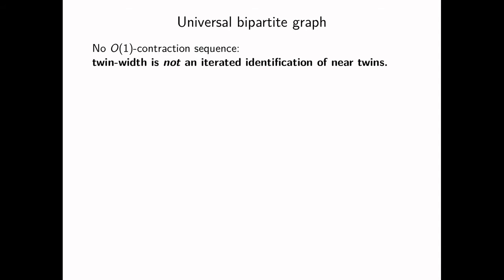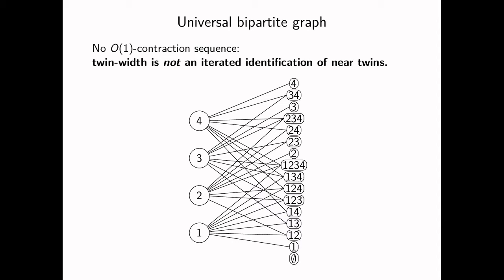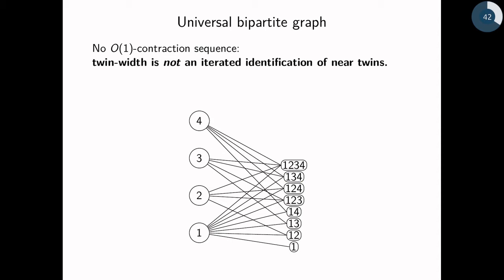This shows that planar grids have twin-width at most 4, and this kind of scheme we can generalize it to d-dimensional grids. They have bounded twin-width where the bound is linear in d, 3d. Let's see an example where there is no good contraction sequence. The point of this example is to illustrate the fact that twin-width is not exactly iteratively identifying near twins. It's something more restrictive than that. So this is a power set graph, it's a universal bipartite graph. Every bipartite graph appears as an induced subgraph of this thing.